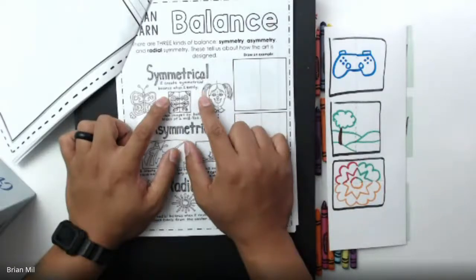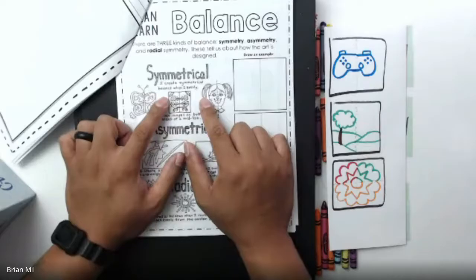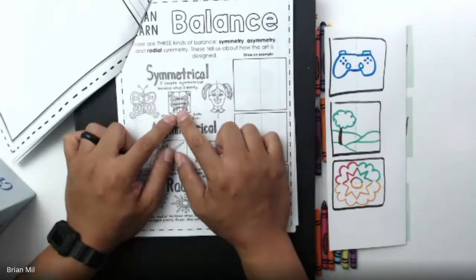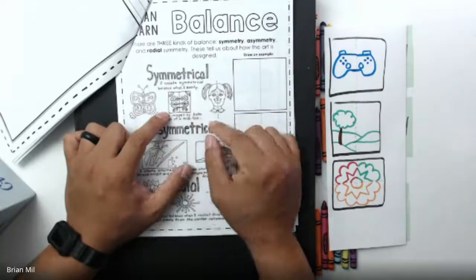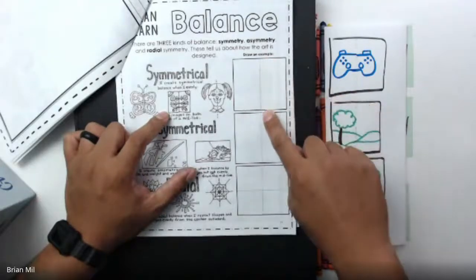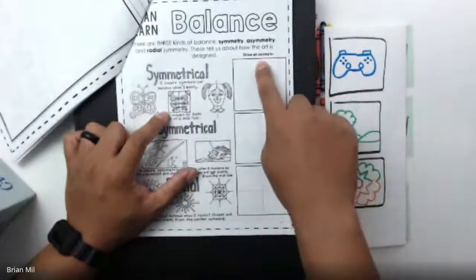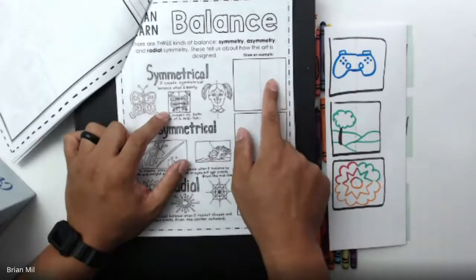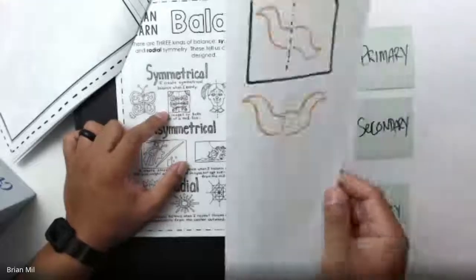The first one is symmetrical. Symmetry is something that we've done a couple years ago - raise your hand if you guys remember symmetry bugs from second grade. Symmetry is basically when you have something mirrored on one side from the other. This dotted line is called the line of symmetry.